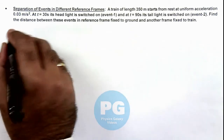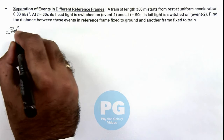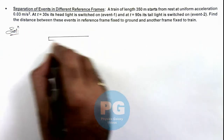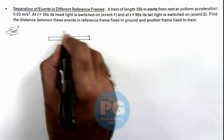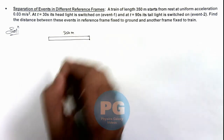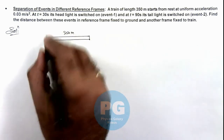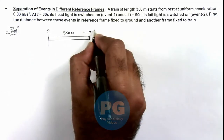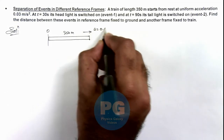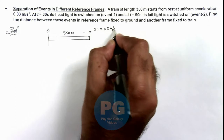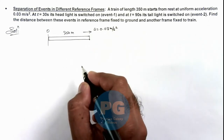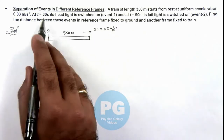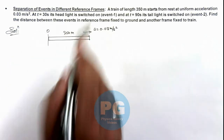In the solution, we draw the situation. This is the train which is of length 350 meters, and from this point which is taken as origin it is starting with acceleration 0.03 meter per second squared. At t equal to 30 seconds its headlight is switched on.